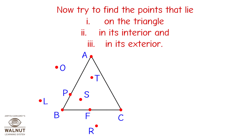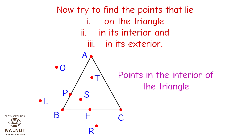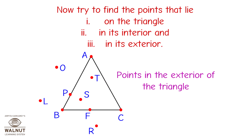Now try to find the points that lie on the triangle, in its interior, and in its exterior. Points on the triangle: points P and F. Points in the interior of the triangle: points S and T. Points in the exterior of the triangle: points O, L, R.